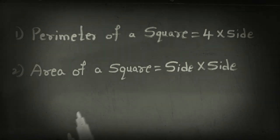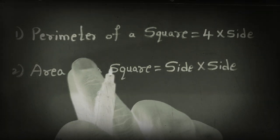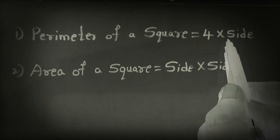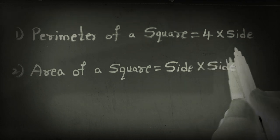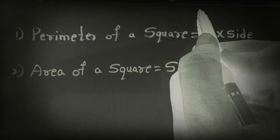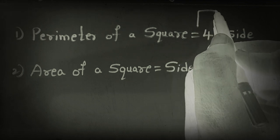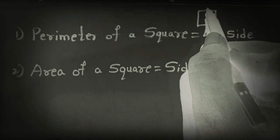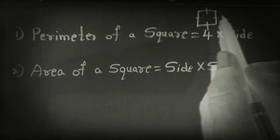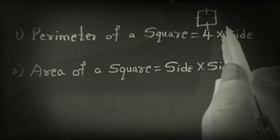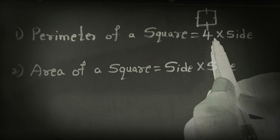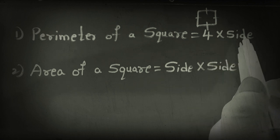Perimeter of a square. To find the perimeter of a square, the formula is 4 into side. Because in a square, as you can see, all the sides are the same. So we have to multiply by 4. The formula is 4 into side.